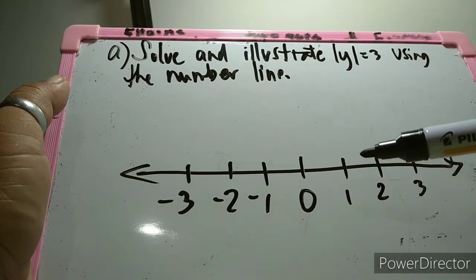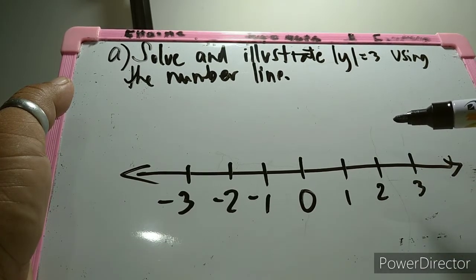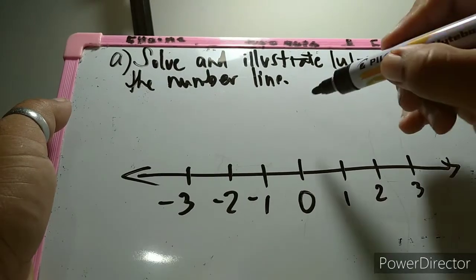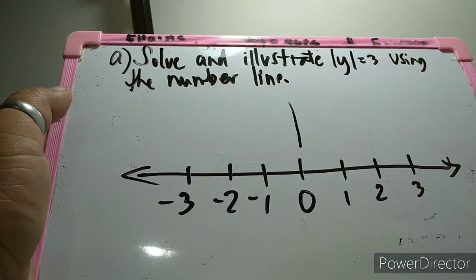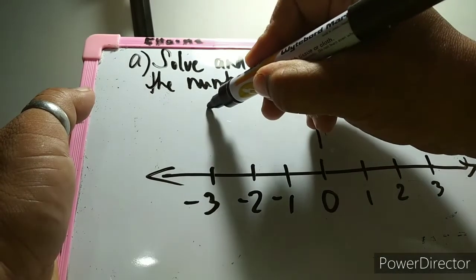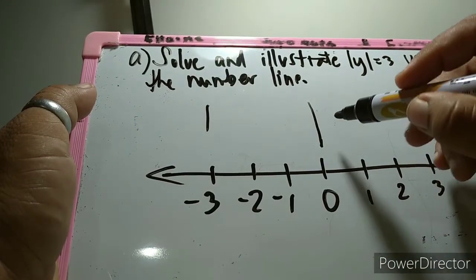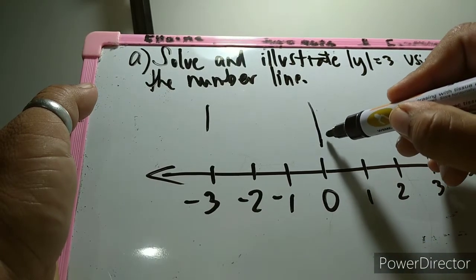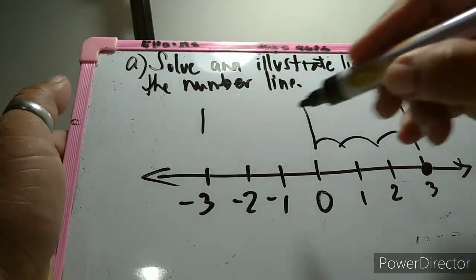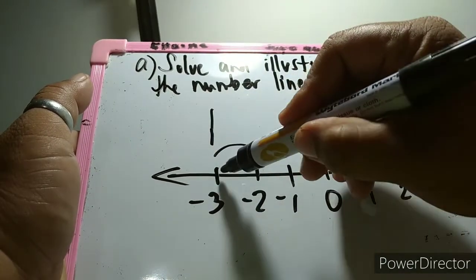In any direction — either to the right or to the left — the distance from zero to y is still equal to 3. Counting three units to the right: one, two, three — we stop at positive 3. Counting three units to the left: one, two, three — we also stop at negative 3.